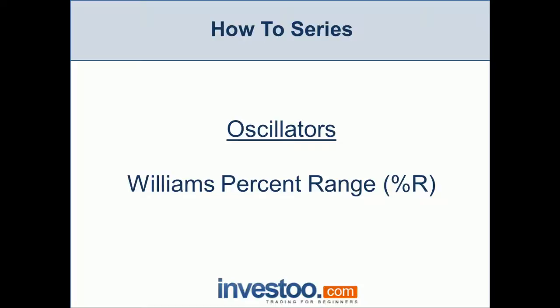Hello traders, welcome to investoo.com's How To series and this module on oscillators. Today we're going to learn about the Williams Percent Range, or Percent R. This indicator oscillates between 0 and minus 100, and gives signals of overbought conditions above minus 20 and oversold conditions below minus 80.